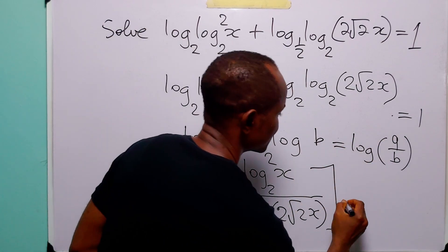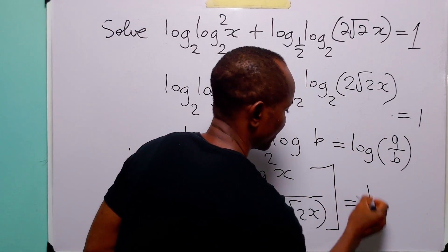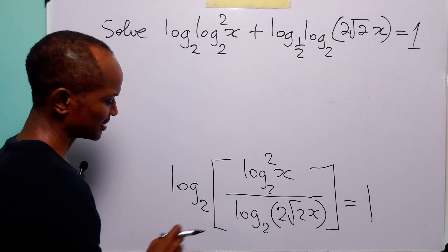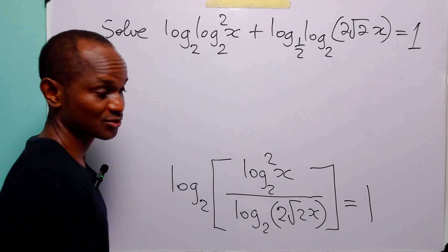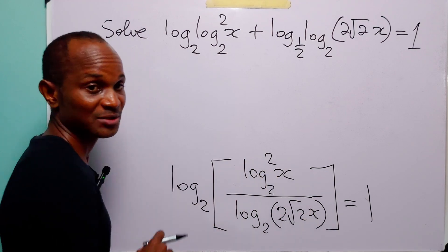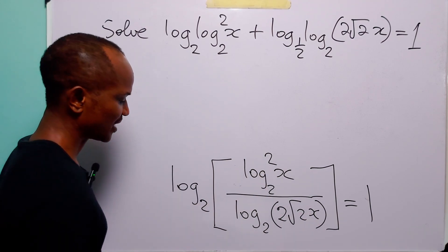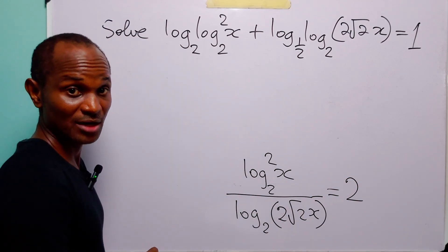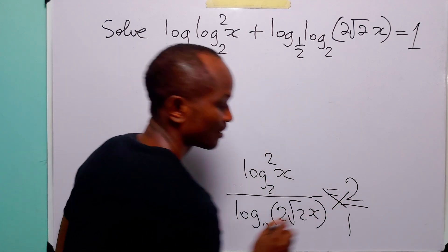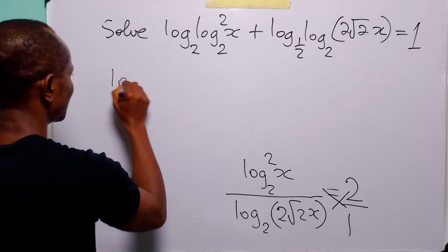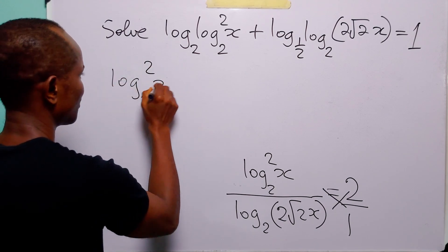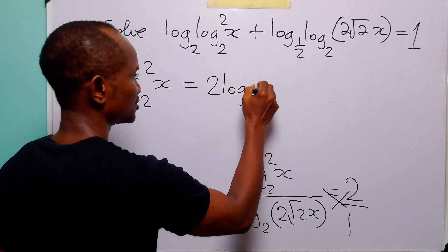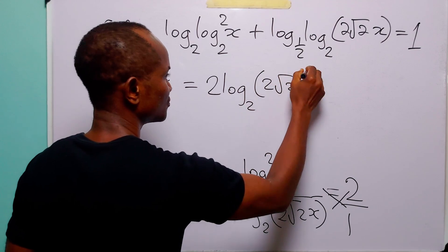This is still equal to 1. Remember that when we have a statement like this, it simply means that 2 raised to power 1, which is 2, is equal to this object. So the fraction is equal to 2, and the next step is to cross-multiply. When we do that, we have that log to base 2 squared of x is equal to 2 times log to base 2 of 2 root 2 x.